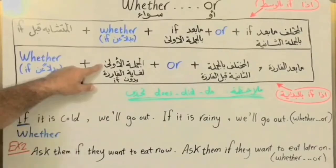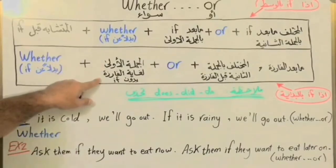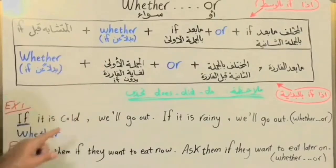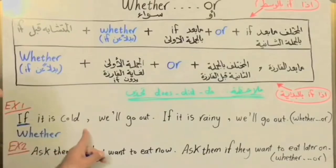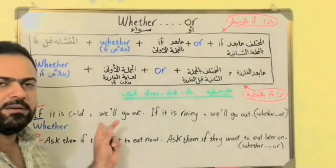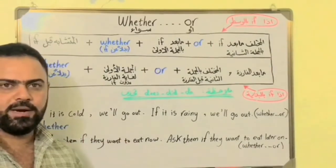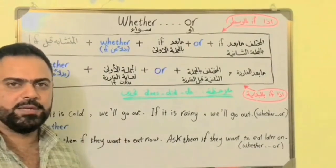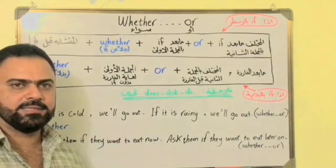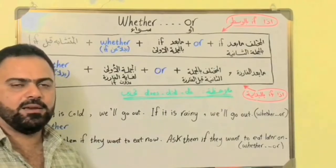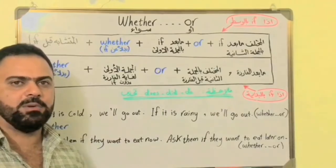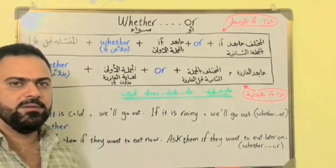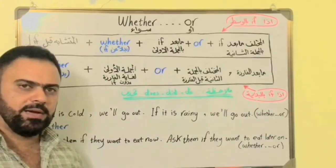For the first rule, since 'if' is in the middle of the sentence, the similar part before 'if' comes down first. Then we place 'whether' in place of 'if', followed by what comes after 'if' in sentence one.